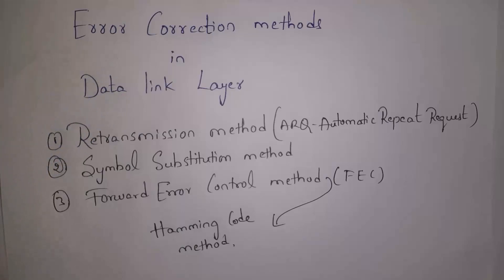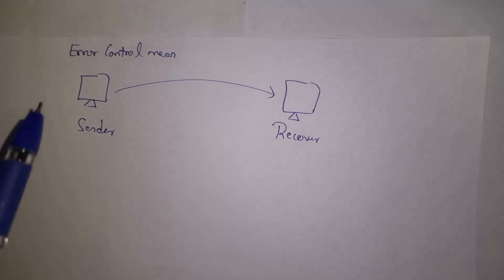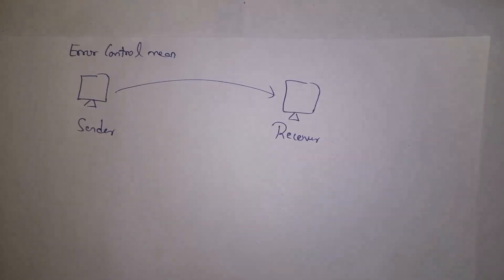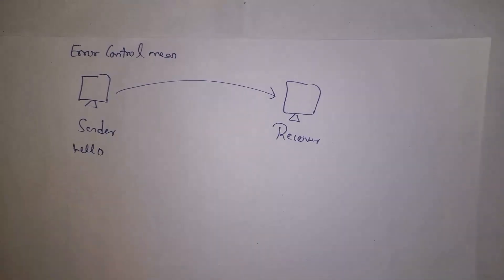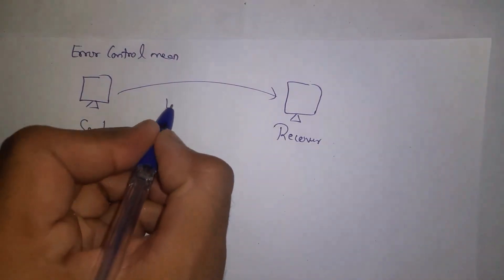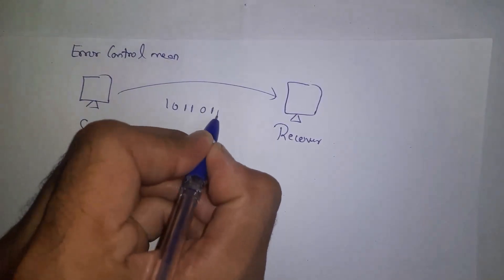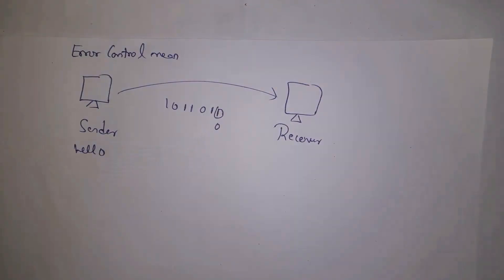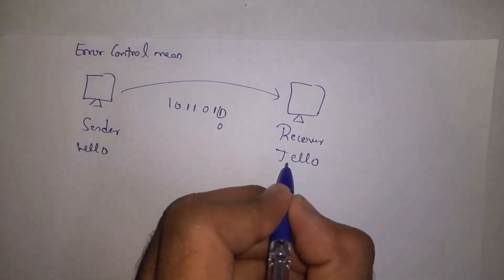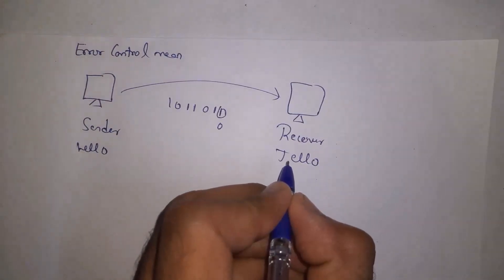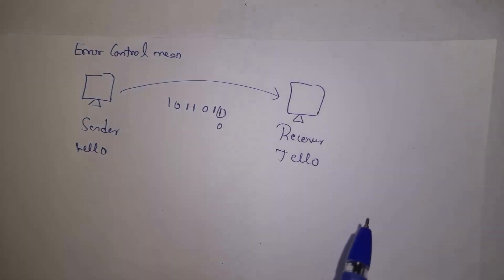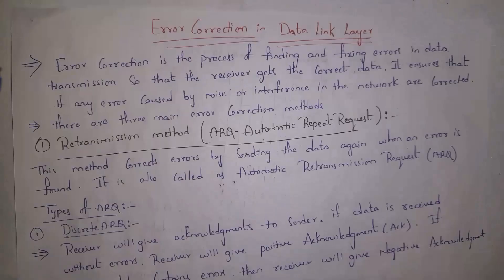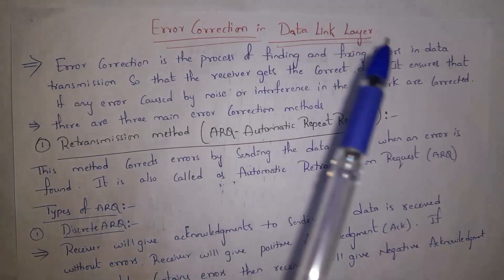Error control means whenever a sender sends data to a receiver, due to some noise or interference in the network, the receiver may receive errors in the data. For example, the sender will send data like 'hello' — the binary code for hello is 10110001 — but due to noise, the last bit '1' is changed to '0', so the receiver may receive 'jello' instead. Data link layer will identify this error. Error control is the process of finding and fixing errors in data transmission.